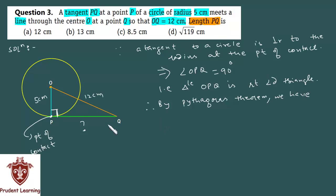You can write using Pythagoras theorem: OP² (the perpendicular) plus PQ² (the base) equals OQ² (the hypotenuse). Now substitute the values. OP is given as 5 cm, so 5² plus PQ² - leave PQ as is - equals OQ², which is given as 12 cm, so 12².